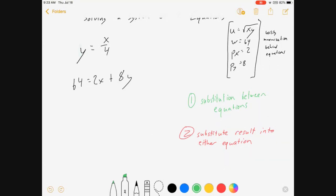I'm going to substitute this y here. In other words, I'm going to put this stuff there. So what is this going to look like? It's going to be 64 equals 2x plus 8y. Substitute between the equations. I have to take a piece from one equation and plug it into the other.